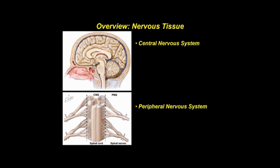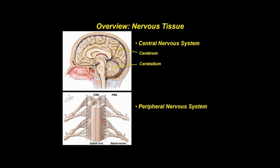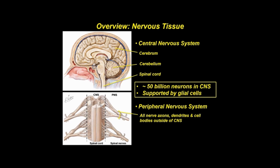The nervous system is divided anatomically into the central nervous system and peripheral nervous system. Within the CNS are the cerebrum, cerebellum, and spinal cord. Nerve axons, dendrites, and cell bodies that lie outside the CNS are the peripheral nervous system. More than 50 billion impulse-conducting neurons are estimated to be in the CNS. These neurons are supported by non-impulse-conducting glial cells.